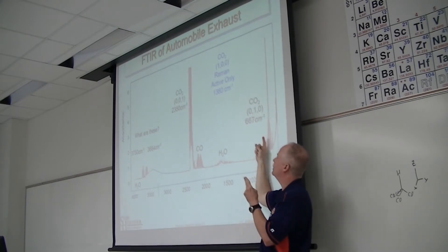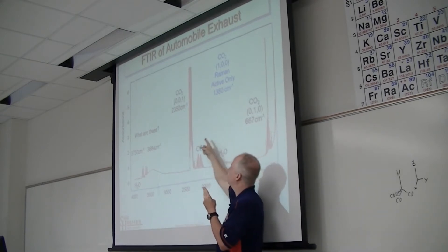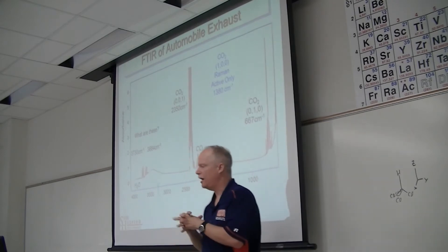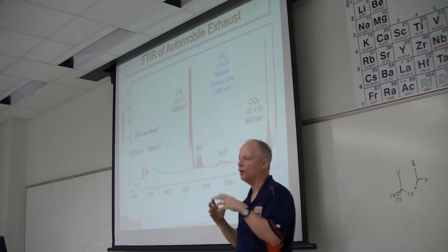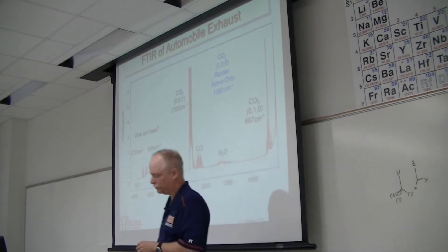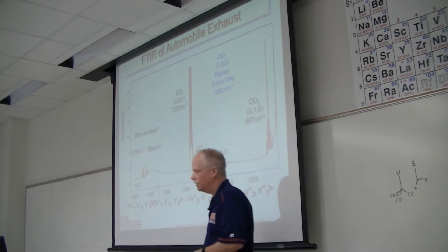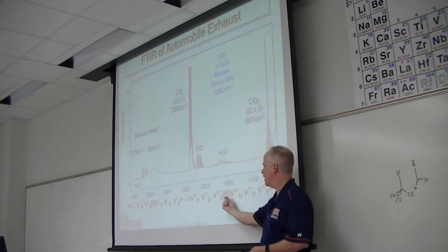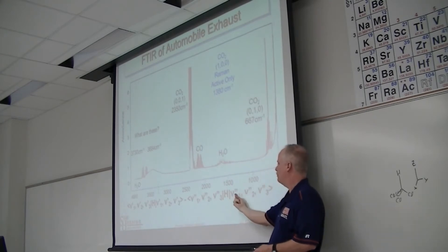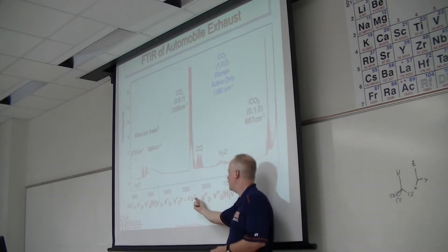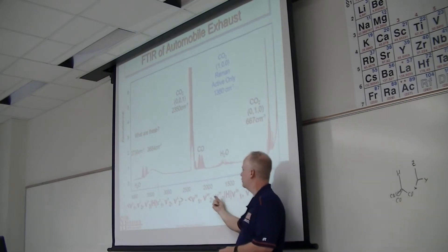Instead of like the particle in the box having one quantum number, we have a quantum number for all 3N-6 or 3N-5 vibrations. In the transition equation, the Hamiltonian operates on a vibrational wave function for every one of those — so it gets really big. These would be the energies for the vibrational motions; these would be the excited state energies. You take the difference and you get your transition equation. The y-axis would be the transition dipole moment.